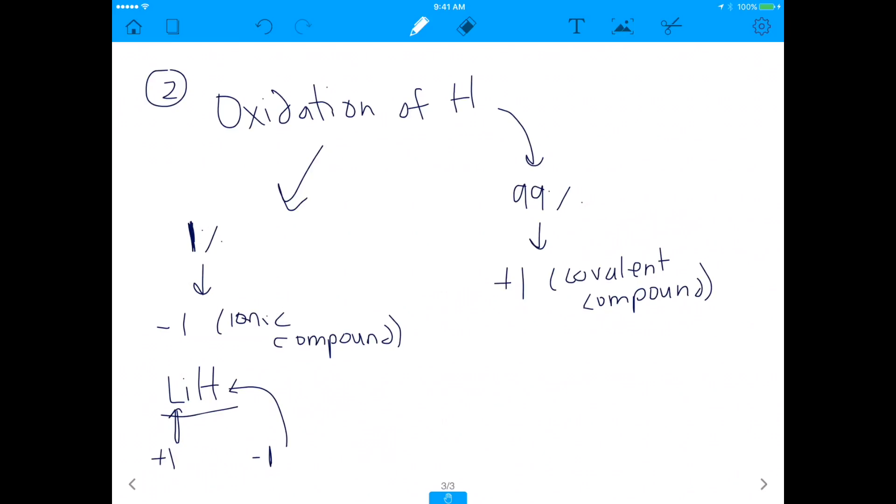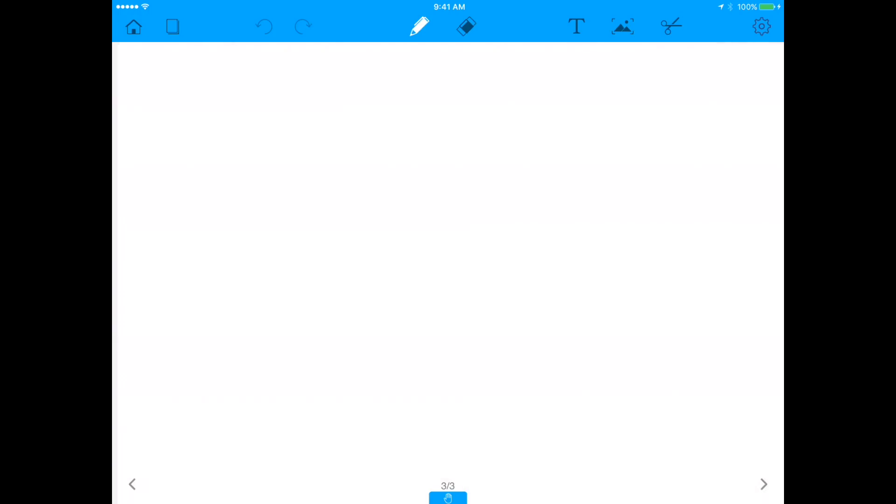But this is very rare. You don't see things like lithium hydride very often. Most of the time you see something like HCl, or maybe you'll see something like HF. These are covalent compounds. They're bonded by covalent bonds. So in this case, H is plus one, therefore chlorine is minus one. Similarly here, H is plus one, and fluorine is minus one. Next one, let me move to the next rule.